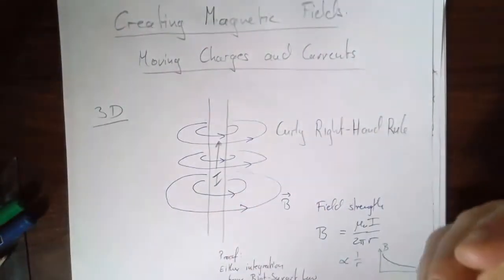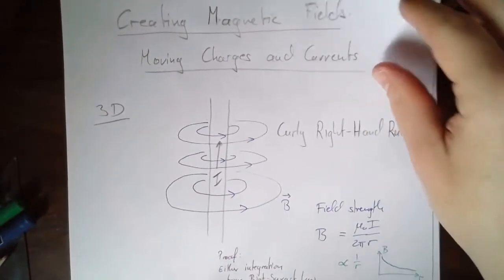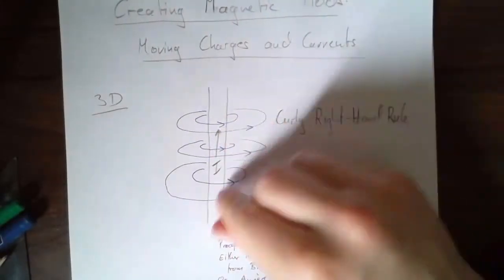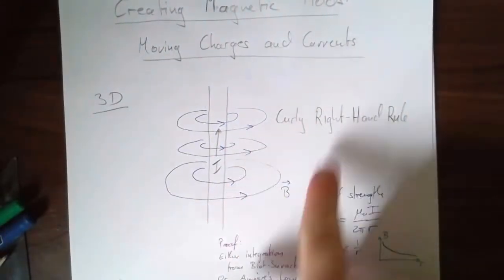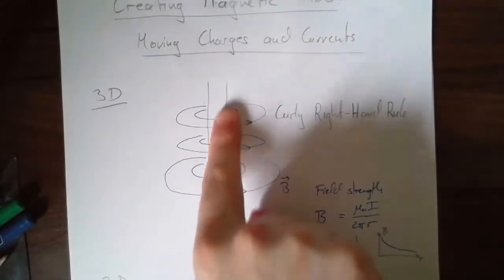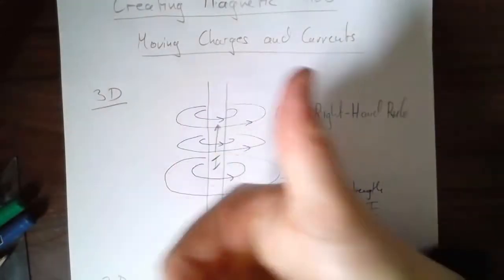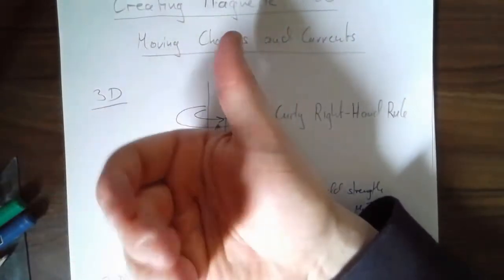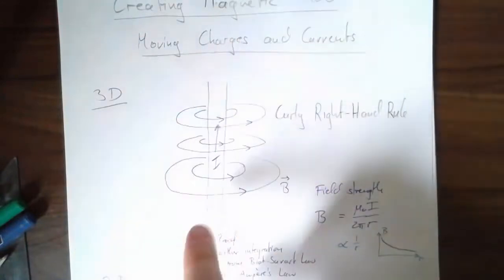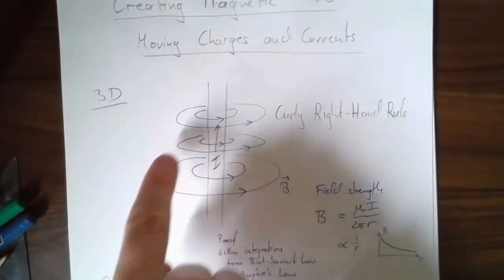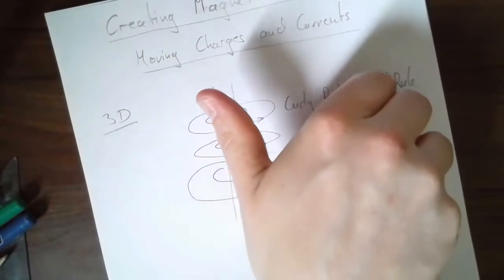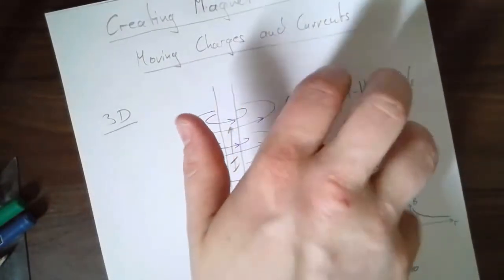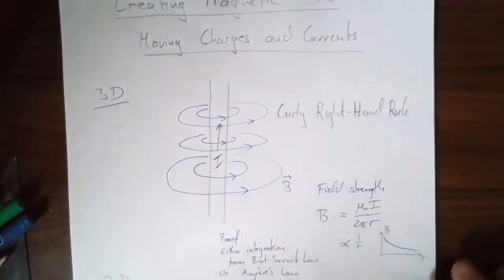One thing about magnetism is that you always have to visualize everything in 3D, which can be hard. You'll see me painstakingly trying to draw those 3D drawings. If the current goes up the page, then with my thumb pointing up, on the left of the wire my fingers are pointing towards the camera — so the field is coming towards us. But on the other side, the thumb points up and the fingers are pointing inwards, so there the field goes in.